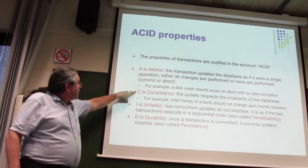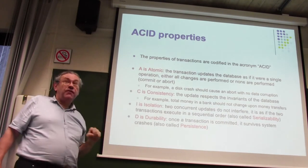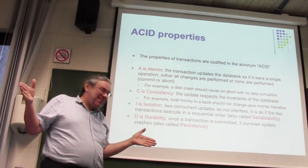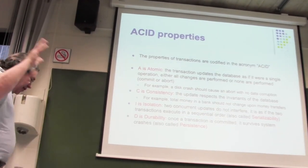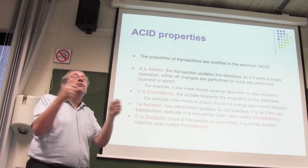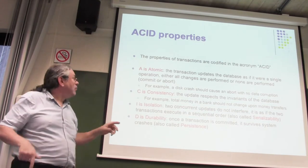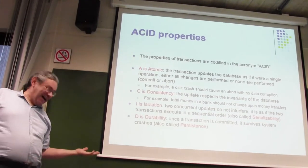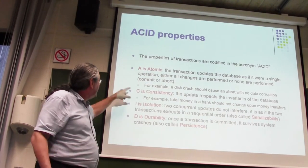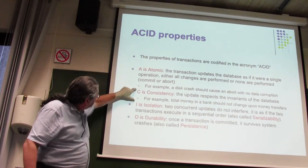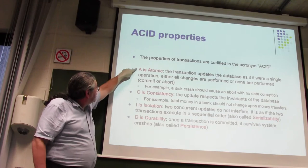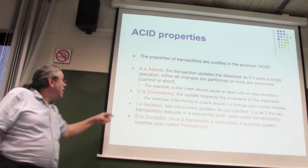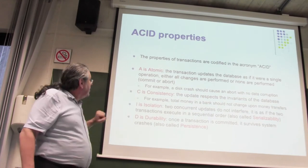C is consistency. Consistency means the database has an invariant — like in a bank, the total amount of money is always the same. The bank is not printing money; it's just transferring money around. Whenever you do a transaction, it must respect that invariant and not create or destroy money. Note that consistency is actually the responsibility of the programmer — the transaction has to be written correctly, but the implementation must preserve what the programmer wrote.